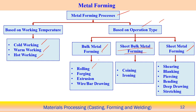Bulk metal forming involves rolling, forging, extrusion, and wire or bar drawing operations. Sheet metal forming operations handle material in the form of very thin sheet — the thin sheet can be sheared, blanked, pierced, bent, deep drawn, or stretched. These forming operations are associated with sheet metal forming. Coining and ironing are known as sheet bulk metal forming operations, which represent the transition between bulk forming and sheet metal forming.